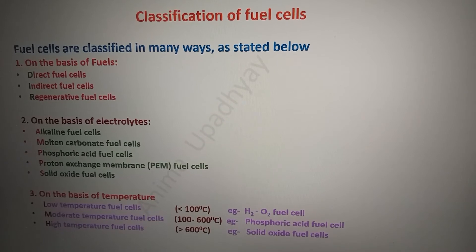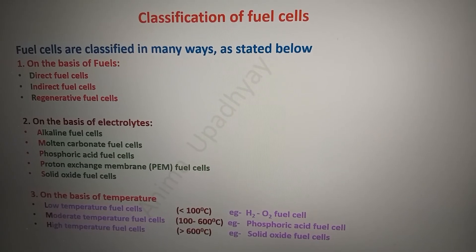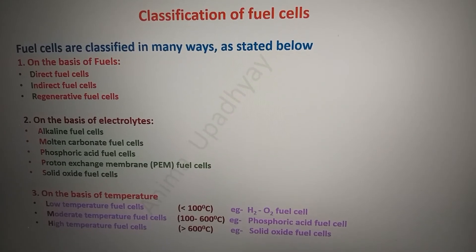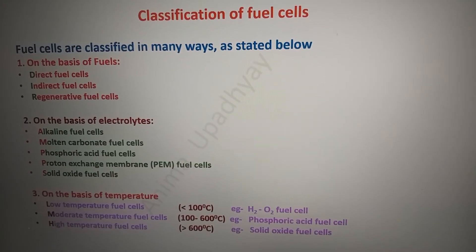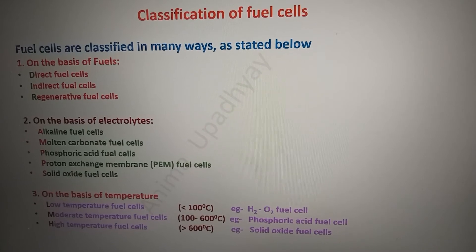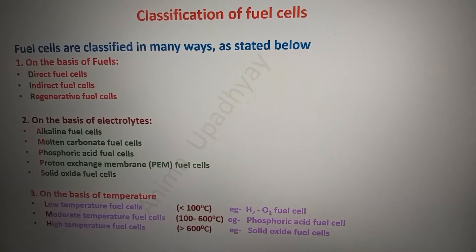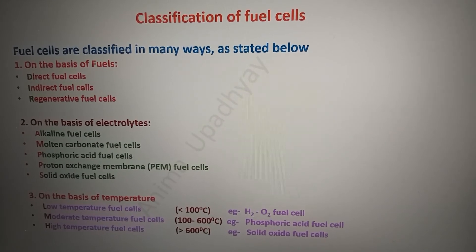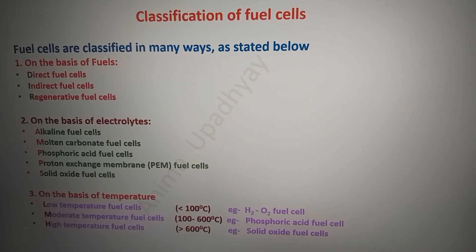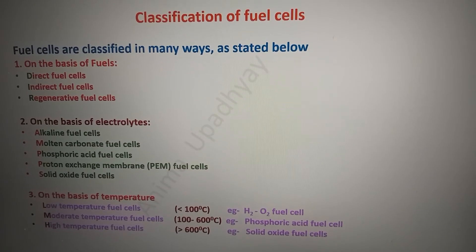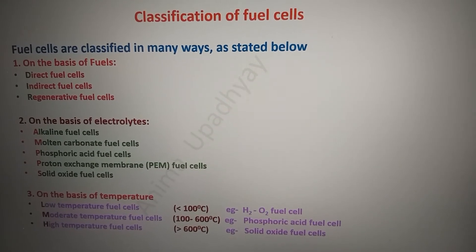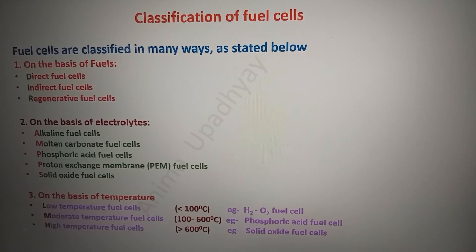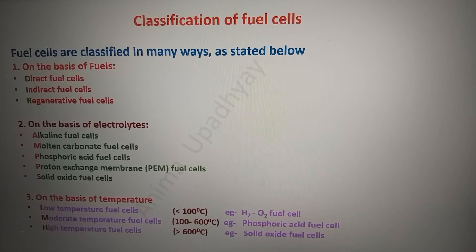The second basis of classification is on the basis of electrolytes. Fuel cells are differentiated into alkaline fuel cells, molten carbonate fuel cells, phosphoric acid fuel cells, proton exchange membrane fuel cells, and solid oxide fuel cells. The first three types use liquid-state electrolytes, whereas the last two types — proton exchange membrane and solid oxide fuel cells — use solid-state electrolytes.